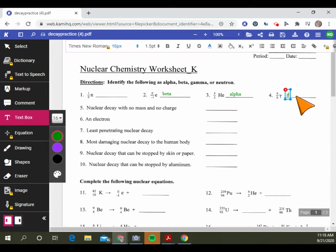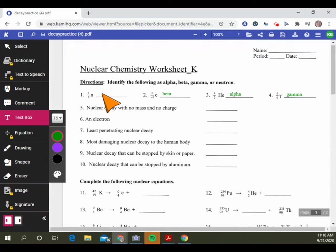Number three is the alpha particle that we discussed being a helium atom. The radioactive element that might lose an alpha particle actually loses two protons and two neutrons in the form of a helium atom.